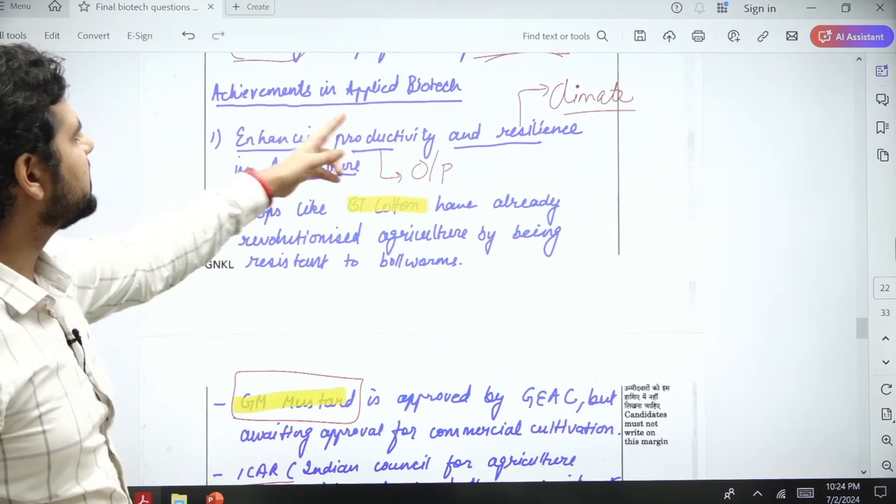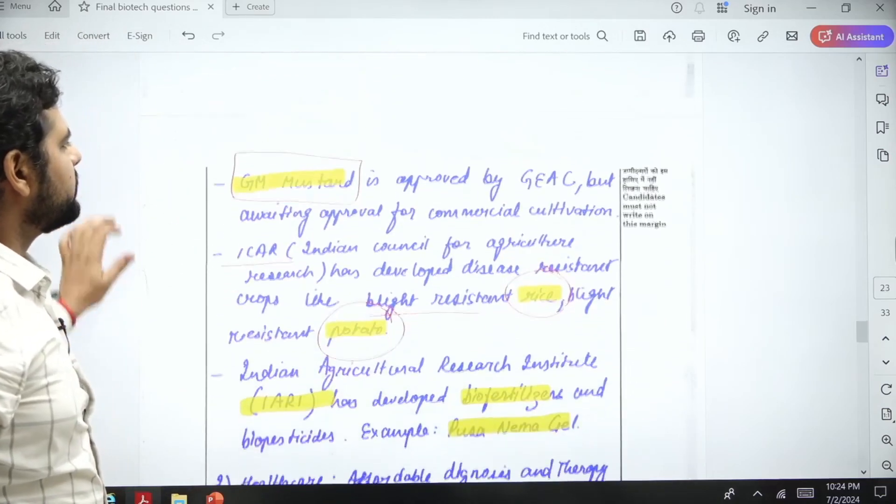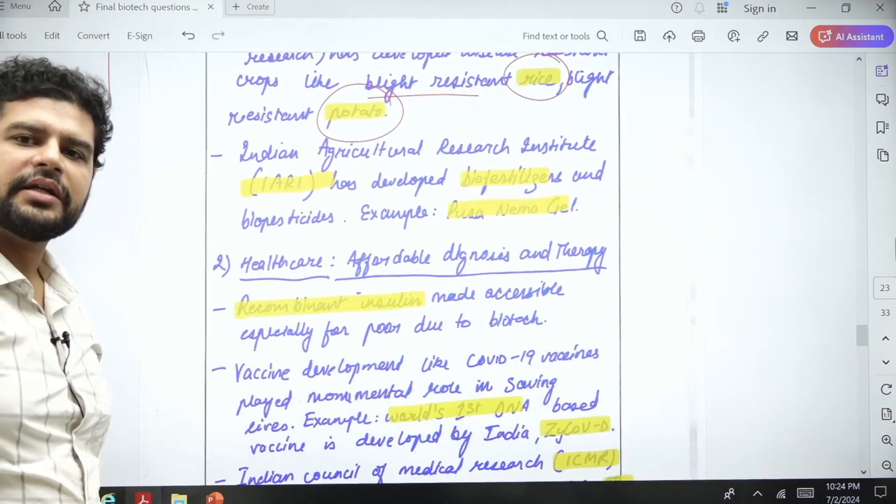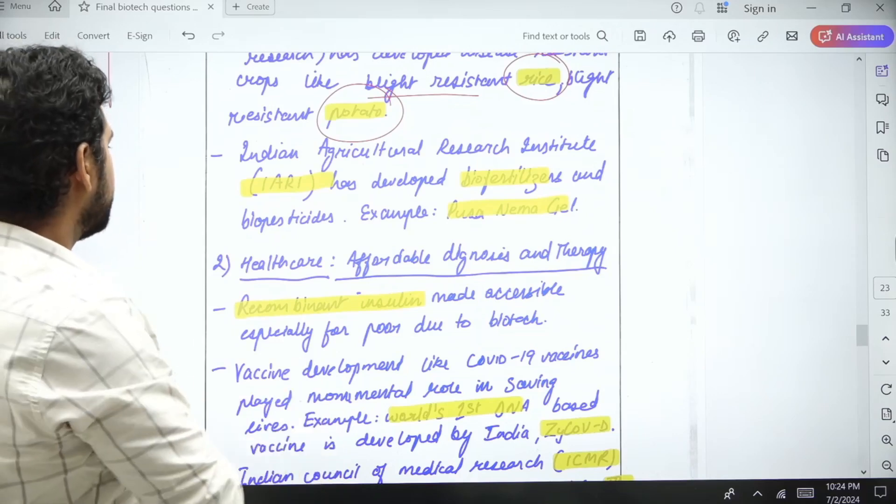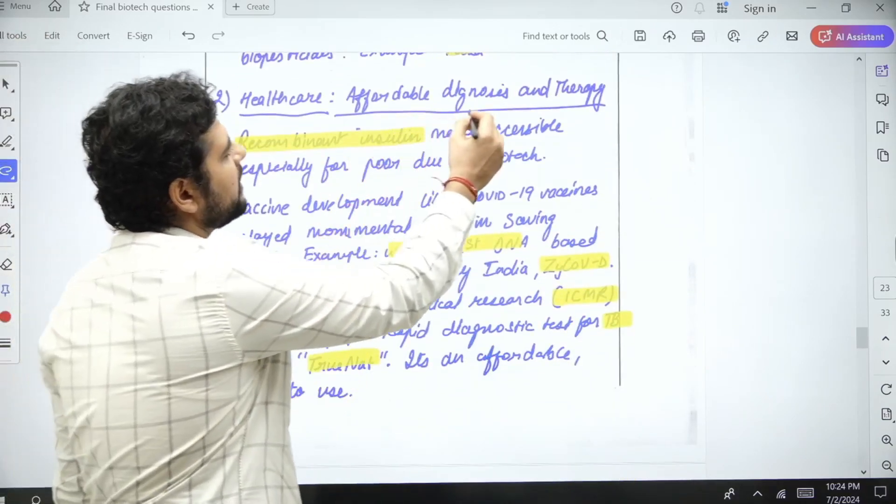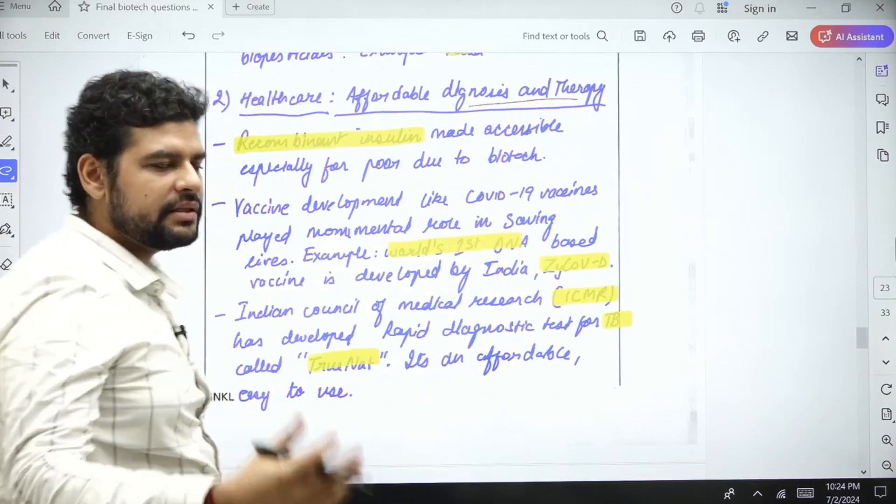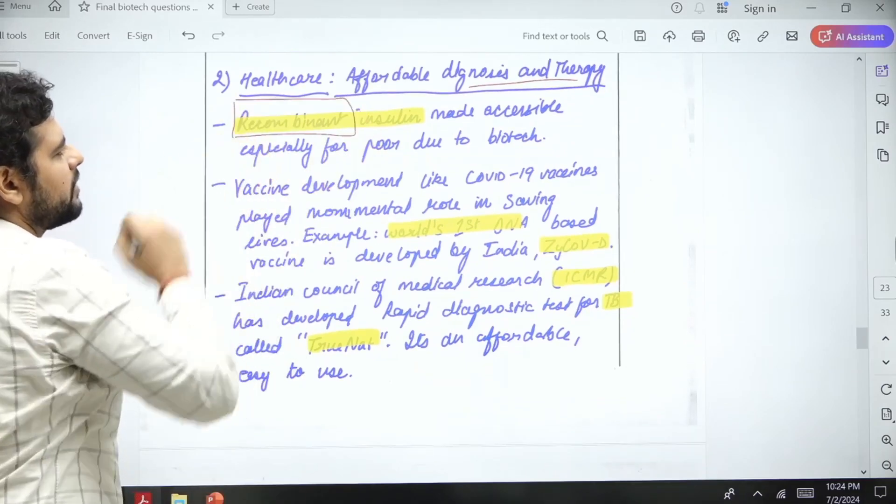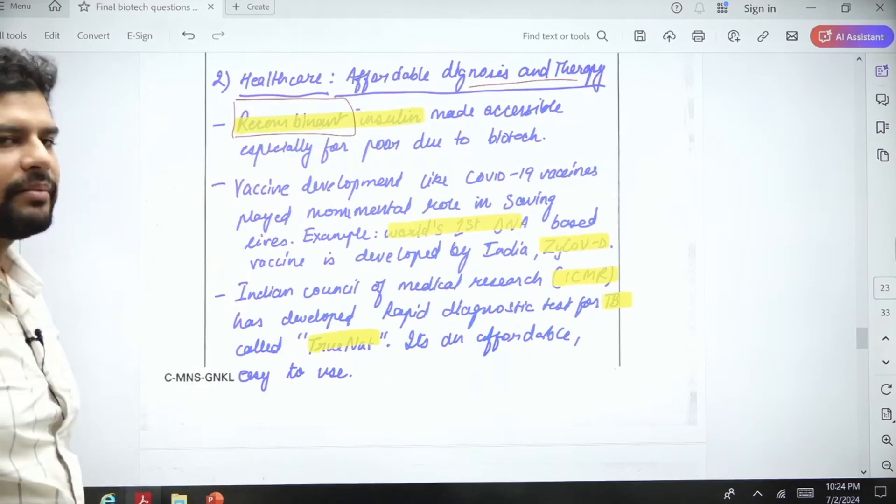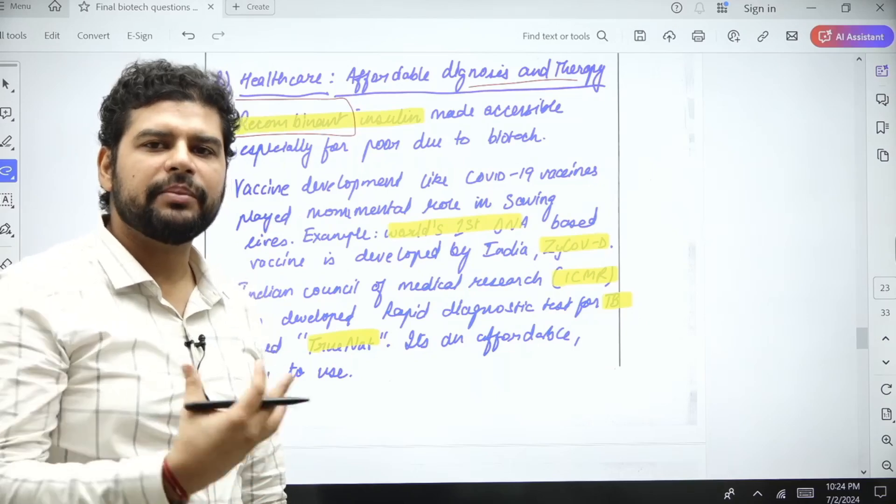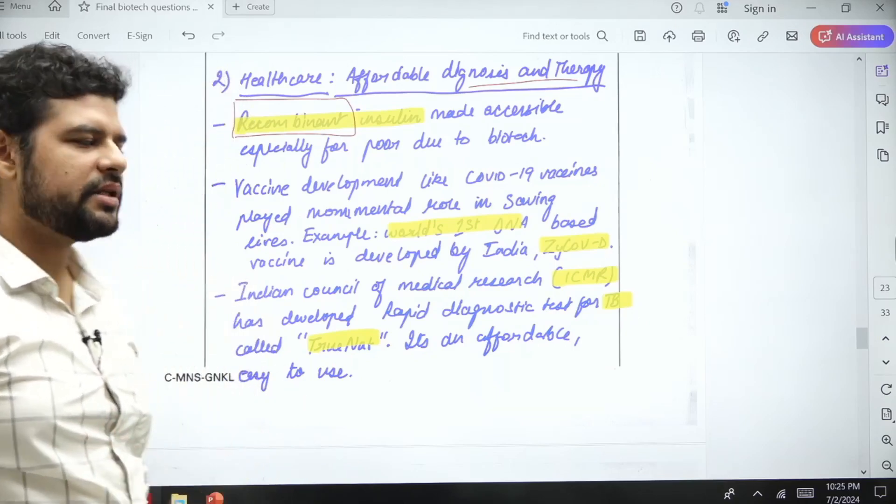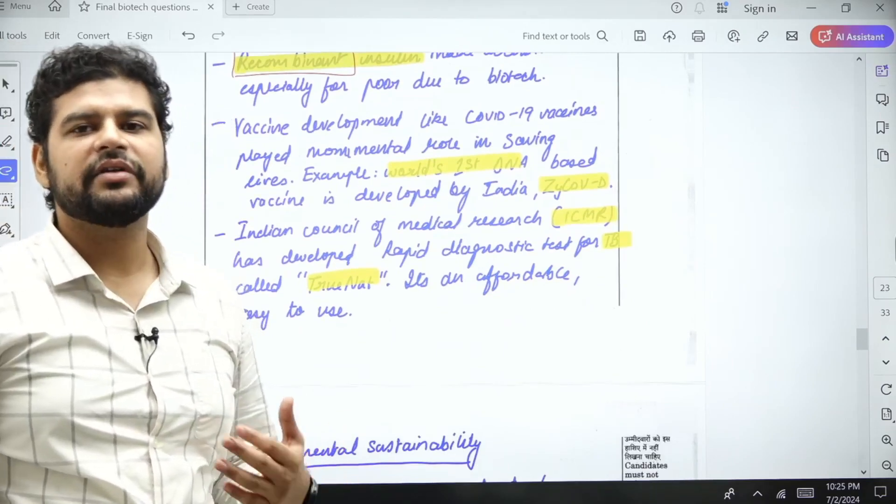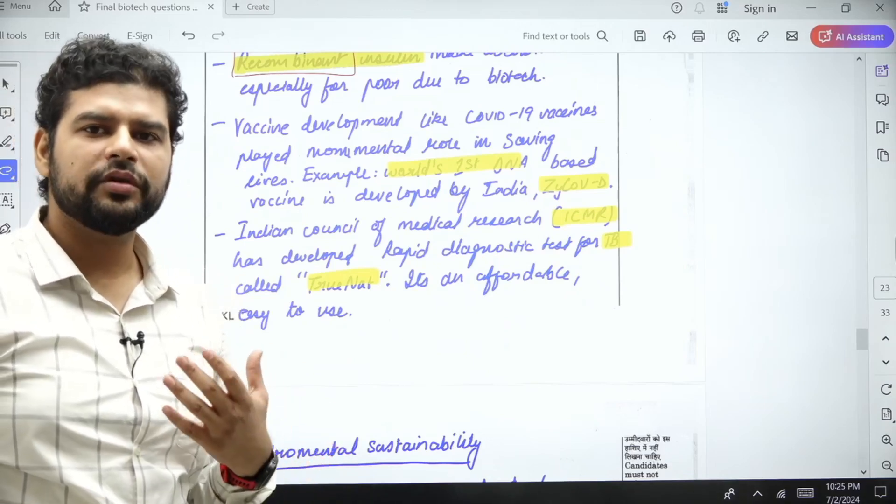We are not going to bounce around the definition and all that. Next is healthcare: it will create affordable diagnosis and therapy. Let's see how. Recombinant insulin—recombinant is a biotechnology process—insulin is created by which it is made accessible, meaning people are able to get it, especially the poorer section.